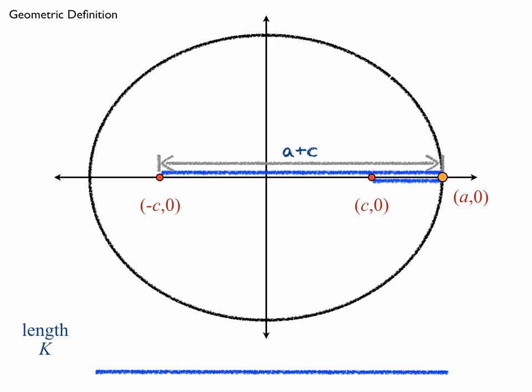Well, the longer segment has to be length a plus c, and the shorter segment has to be a minus c. So when you add those two lengths up, you realize that you must have 2a.